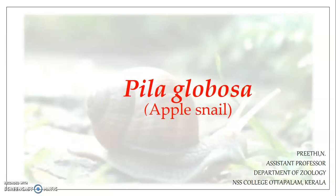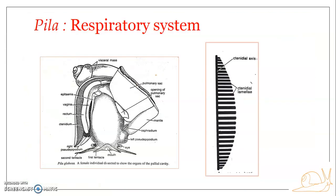Welcome back to the session on Pila globosa, the apple snail. We are going to discuss the respiratory system. Pila is an amphibious mollusk — adapted for life in water as well as on land. To suit its amphibious life, it exhibits two modes of respiration: aquatic respiration with the help of ctenidium or gills, and aerial respiration with the help of a pulmonary sac or lungs.